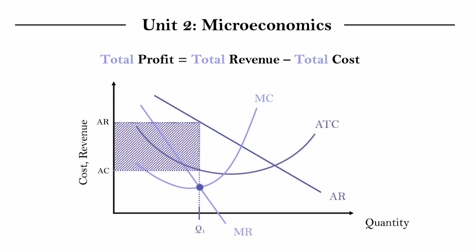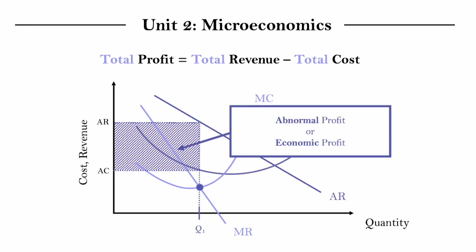Now, the first idea we'll introduce is the fact that this profit shown on the diagram here, the total revenue area subtracted by the total cost area, is a type of profit we call abnormal profit or economic profit.